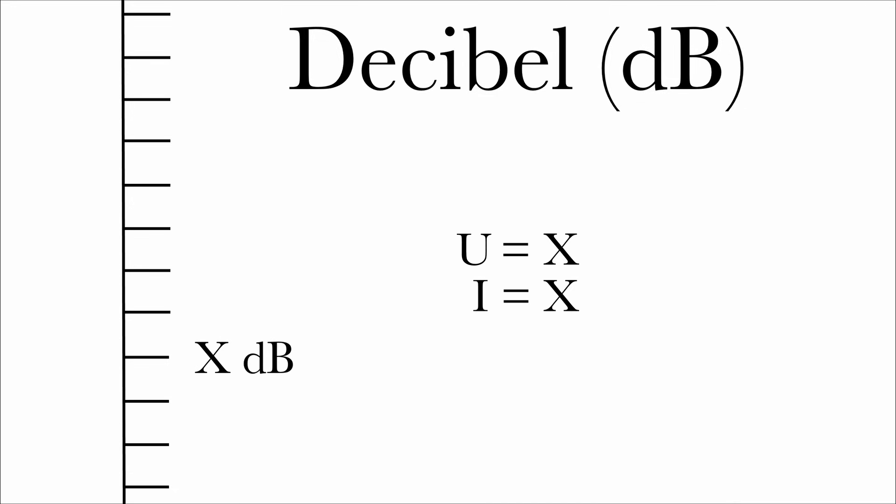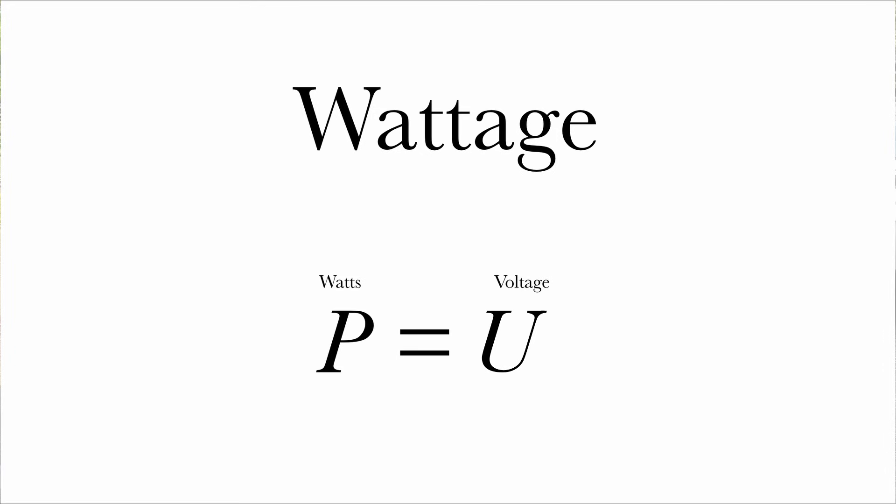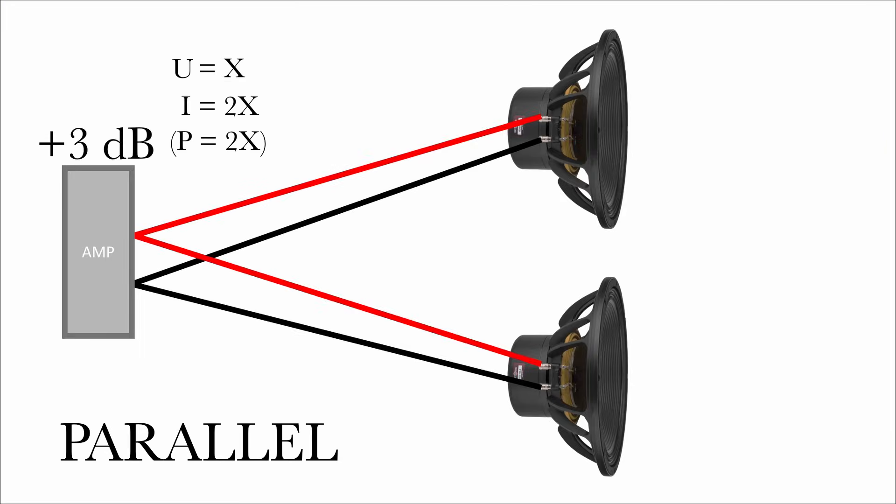According to the decibel scale, any doubling of energy anywhere in the system produces 3 dB more output. Watts is volts times current, so doubling either the volts or the current is doubling the wattage, which is doubling the electrical energy of the system. And then the second speaker itself is also doubling the acoustic energy, so that's why we get a 6 dB increase at the microphone when we connect that second subwoofer.